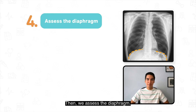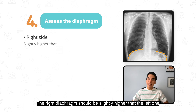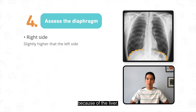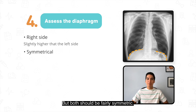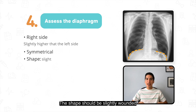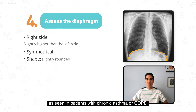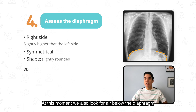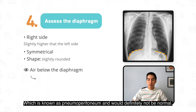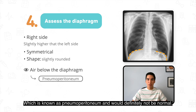Then we assess the diaphragm. The right diaphragm should be slightly higher than the left one because of the liver, but both should be fairly symmetric. Their shape should be slightly rounded, since flatness of the diaphragm might indicate air flow restrictions as seen in patients with chronic asthma or COPD. At this moment we also look for air below the diaphragm, which is known as pneumoperitoneum, and would definitely not be normal.